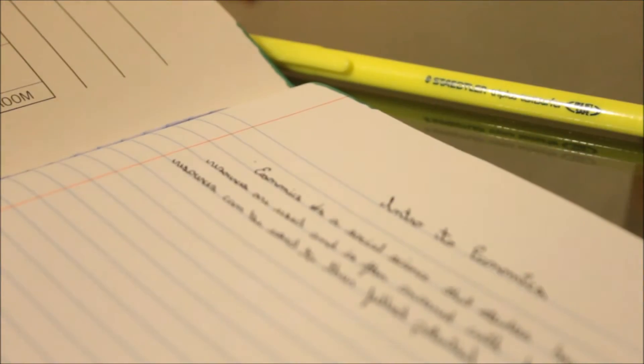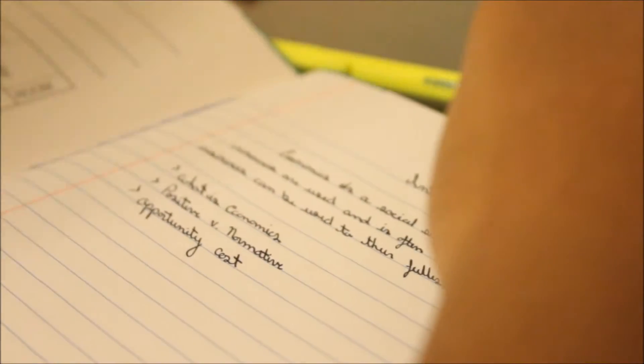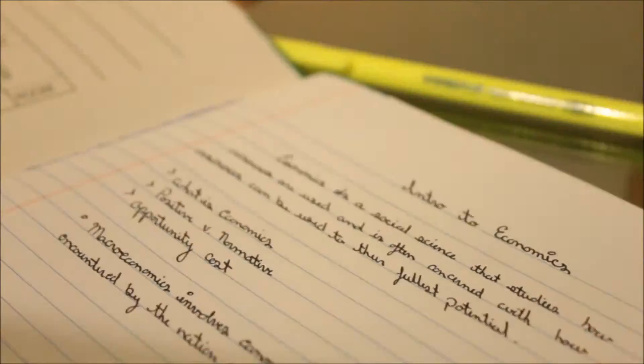So right now what I'm about to do is I'm going over the definition of economics and just the basis of economics. I'm going to be going over positive and normative economics and opportunity cost, resources, the definition, and the different types of resources.